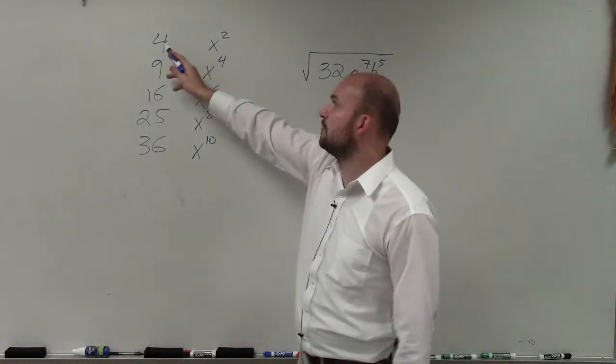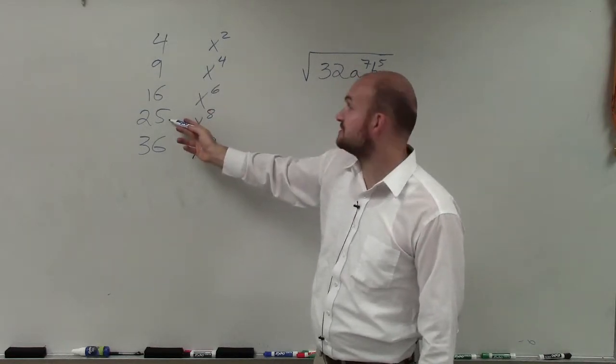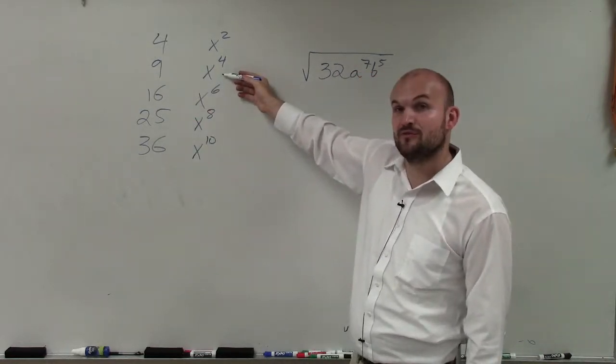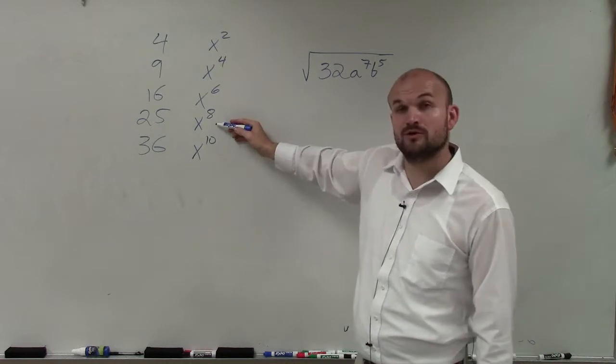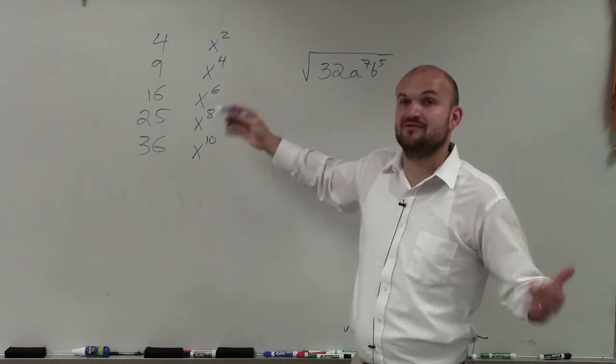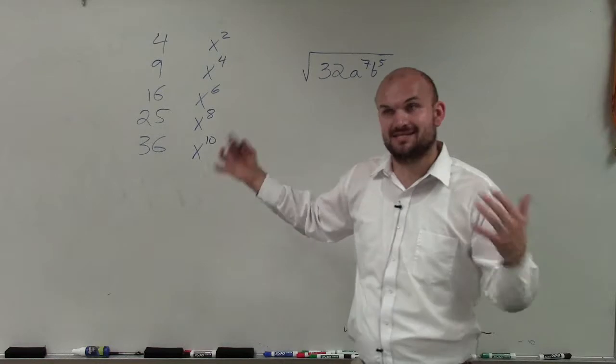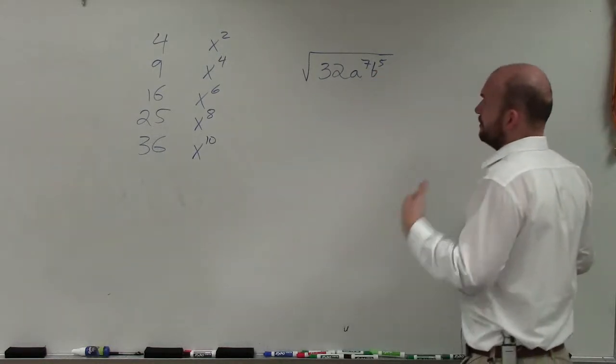The square root of 4 is 2. The square root of 25 is 5. The square root of x to the fourth is x squared. The square root of x to the eighth is x to the fourth, because x to the fourth times x to the fourth equals x to the eighth.